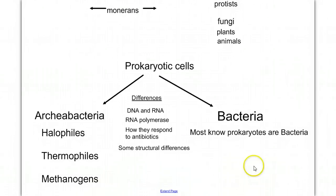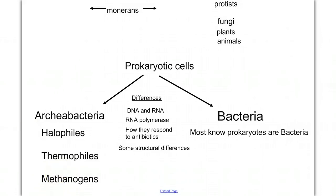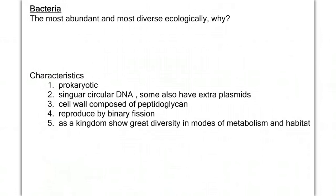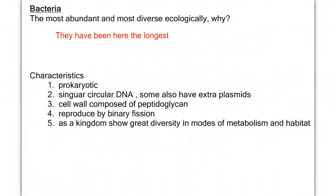With those differences pointed out, we're going to spend most of our time talking about bacteria. Most known prokaryotes are bacteria. The bacteria are the most abundant and most diverse ecologically on our planet, meaning there are bacteria in greater numbers and in greater locations than any other type of organism. The reason is they've been here the longest. We believe that the earliest organisms on Earth were probably very similar to modern-day bacteria in terms of their structure and their metabolism.